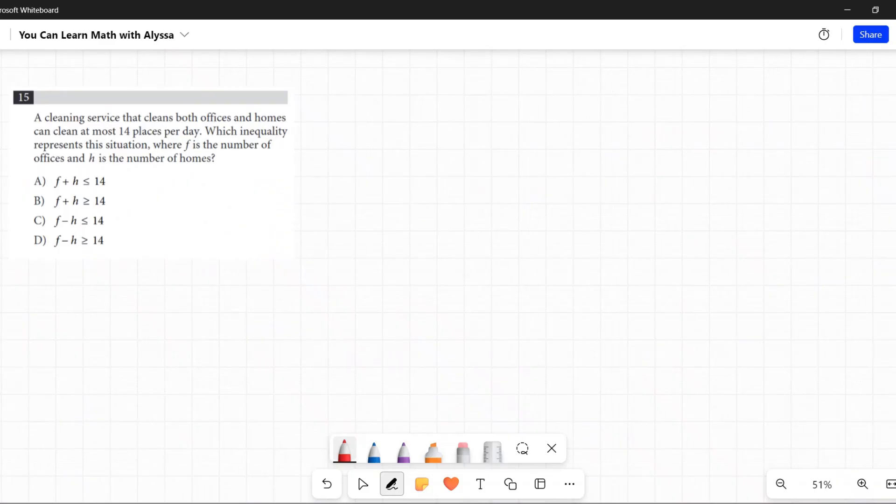A cleaning service that cleans both offices and homes can clean at most 14 places per day. Which inequality represents this situation where F is the number of offices and H is the number of homes?